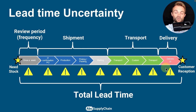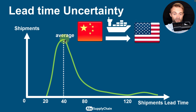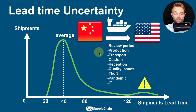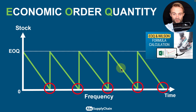For example, if you're shipping products from China to the US with an average total lead time of 40 days, that average alone is not the right parameter to define how much stock you need. You can have delays or early arrivals, plus issues with production, transport, customs, quality, or missing components. In extreme cases, a shipment could take 120 days — you need to account for these scenarios.